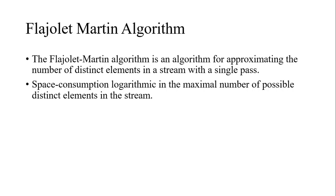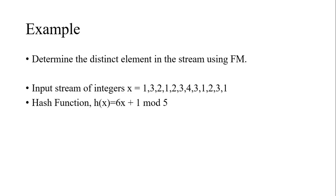The FM algorithm is also called an approximation algorithm — it approximates the number of distinct elements in a stream with a single pass. For example, suppose you want to know how many distinct users visited a particular website in the last two hours. In that case, we use the Flajolet-Martin algorithm. Its space consumption is logarithmic in the maximum number of possible distinct elements in the stream.